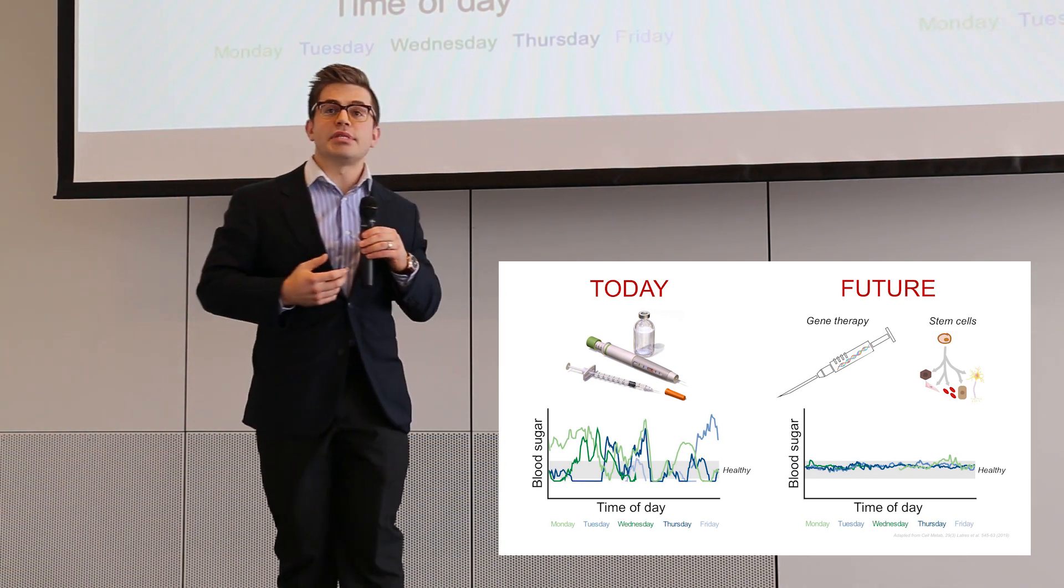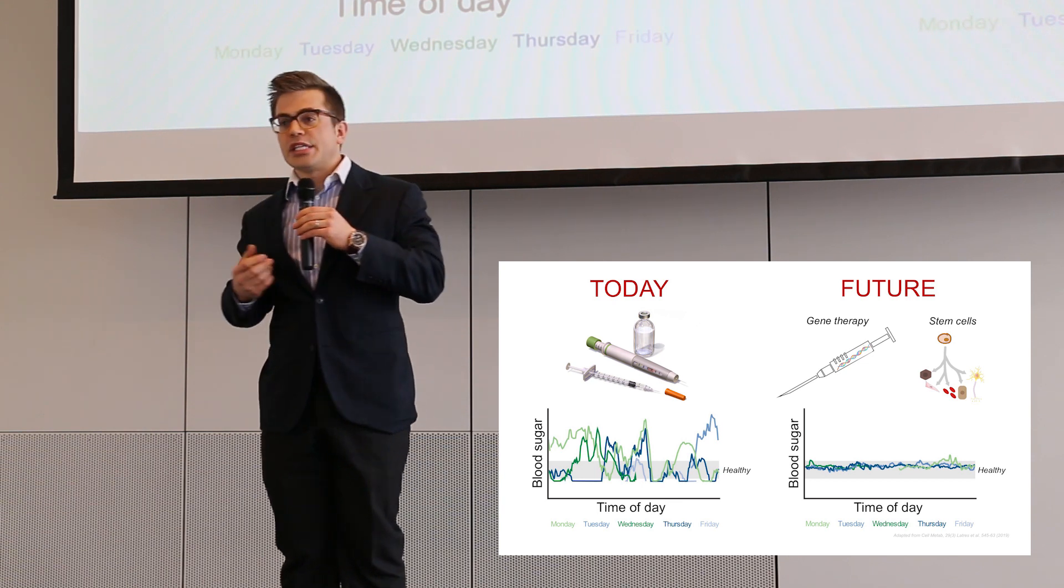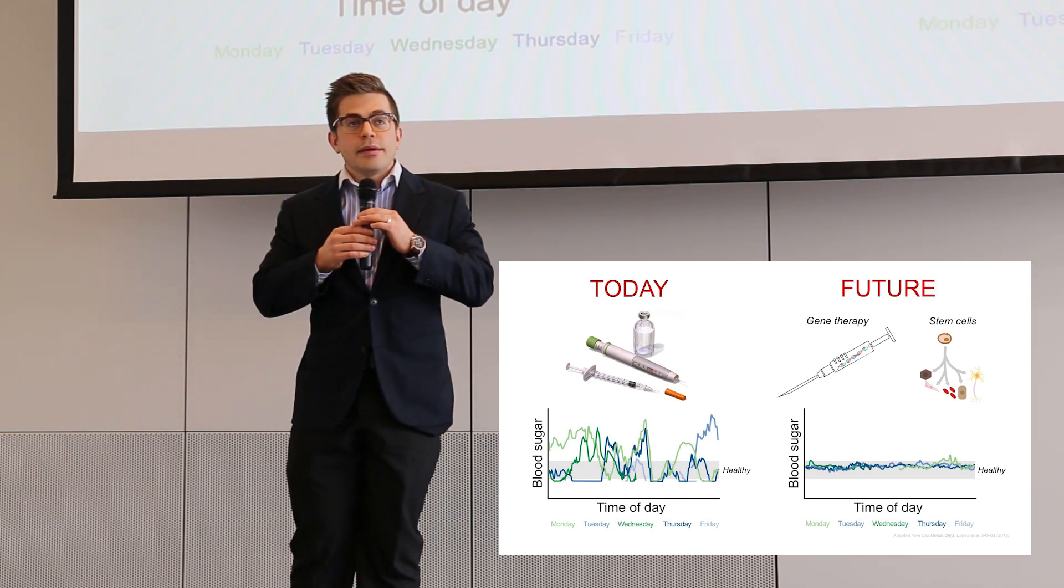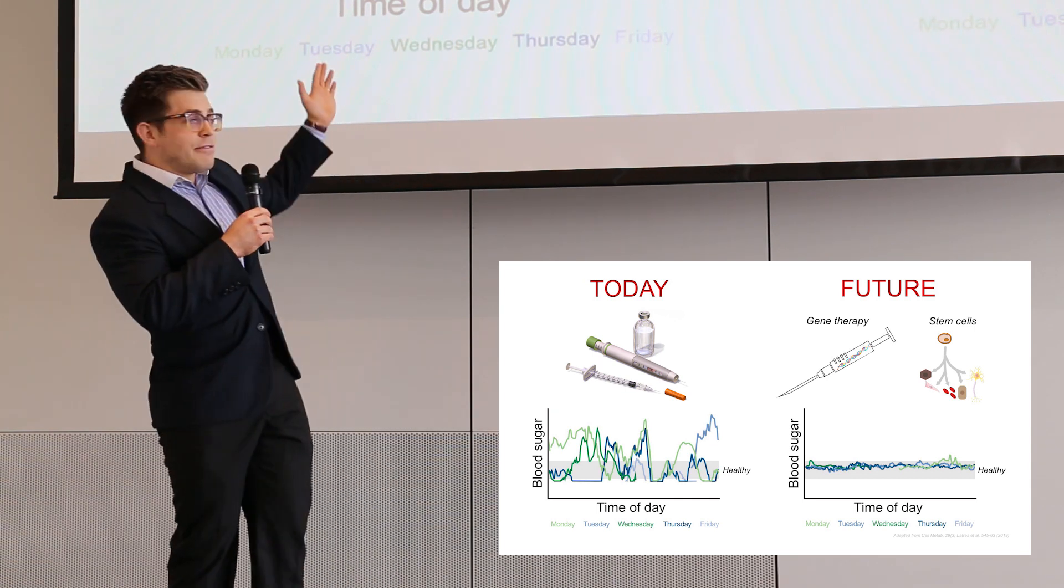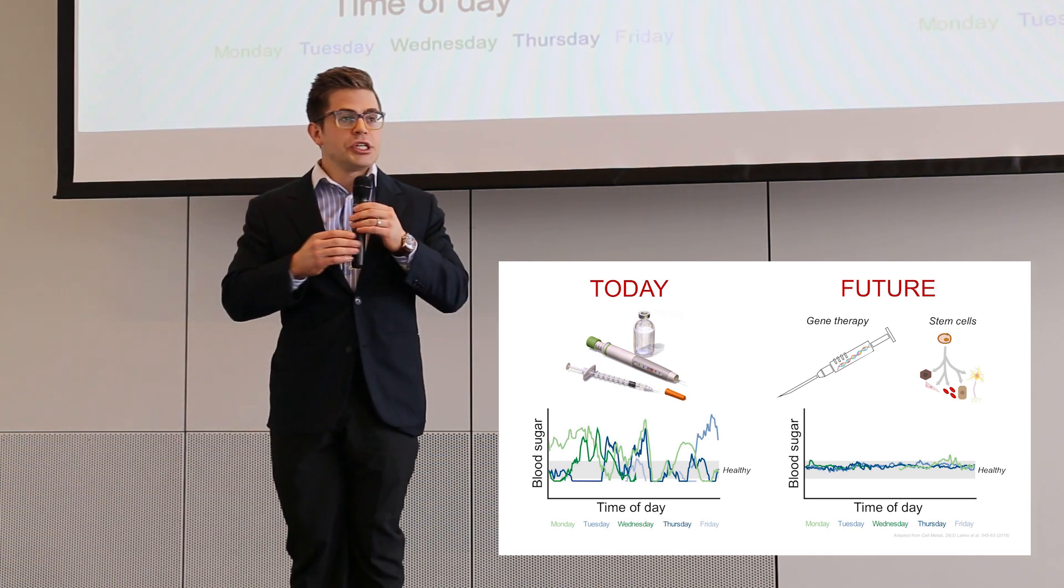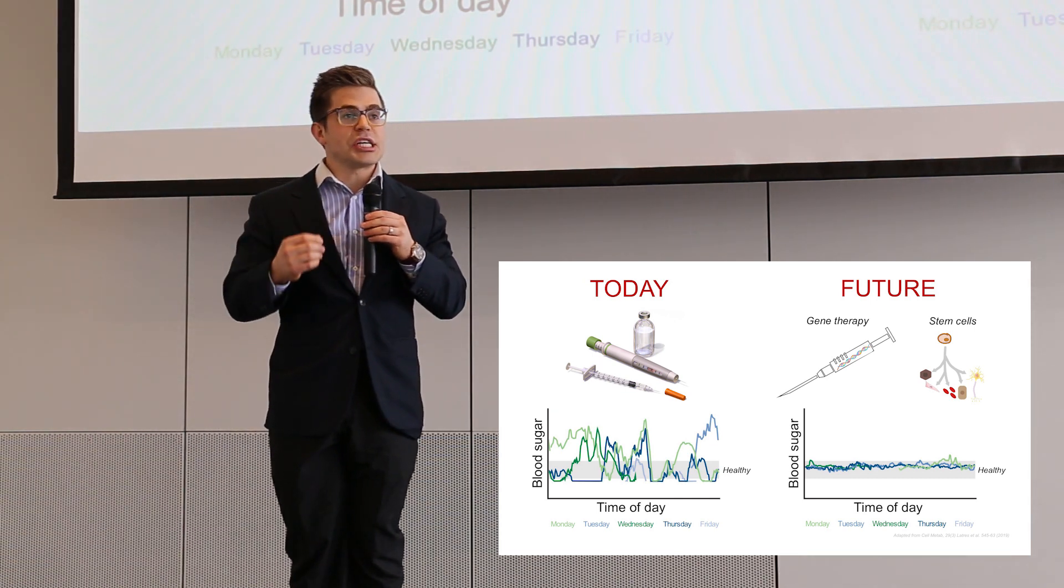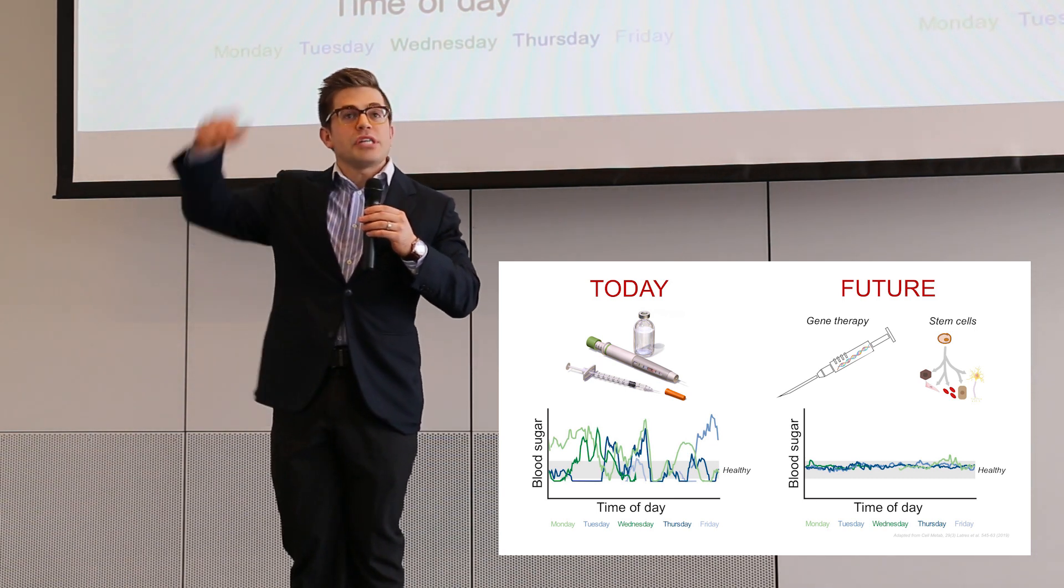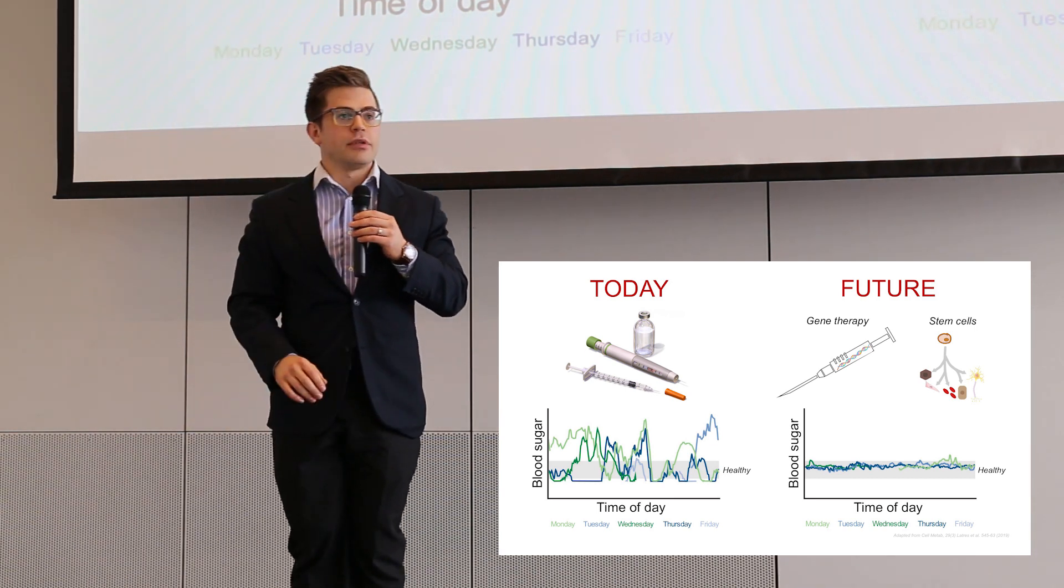Thus, the solution seems simple: replace insulin by injection. But regrettably, injections fall short. Shown on the left is the blood sugar tracking of a patient replacing insulin by injections. They face many frustrating high and dangerous low blood sugar levels.